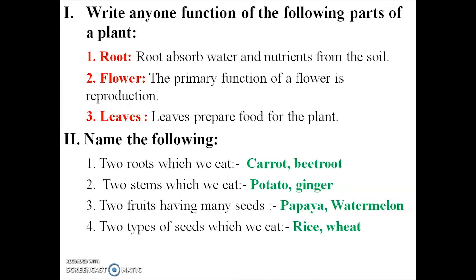Second one: two stems which we eat - potato and ginger. These are underground stems. Spell the words: potato - P-O-T-A-T-O, ginger - G-I-N-G-E-R. Sugarcane is also a stem we eat.